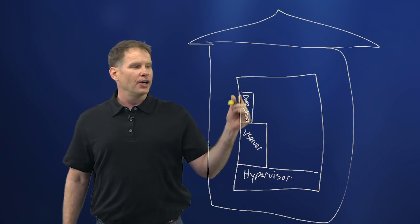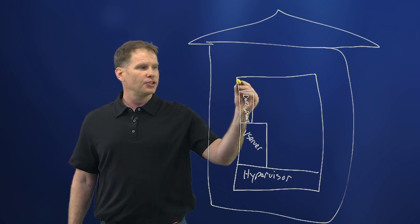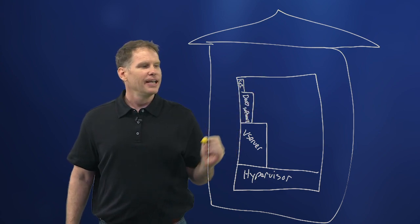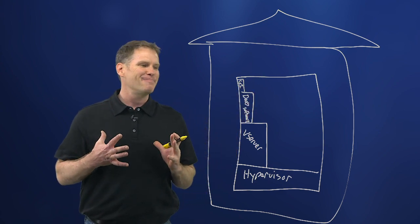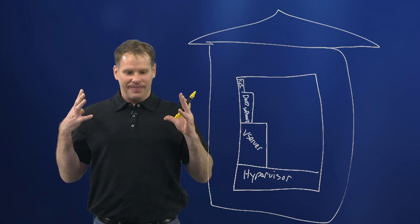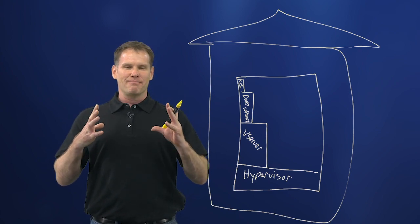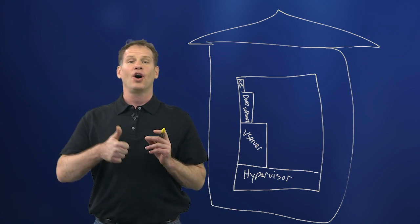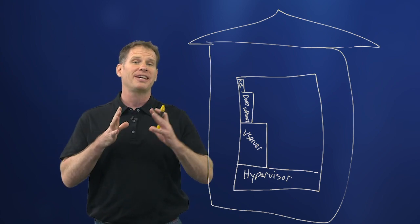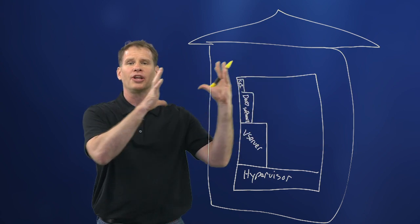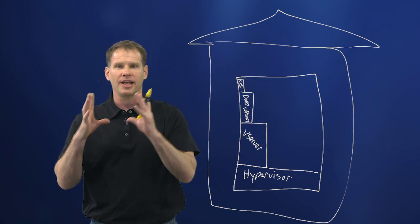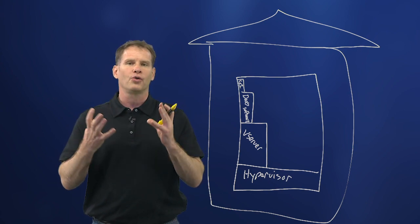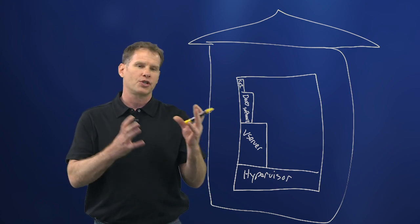Within this DAS software, we're going to create what's called a golden image. And this is basically like a machine that you would have with all of your applications on it and all of the software on it. If we want to make a hundred of these machines, they're all going to come from the golden image. So it's a virtual machine that holds everything that's going to be put on the other virtual machines.